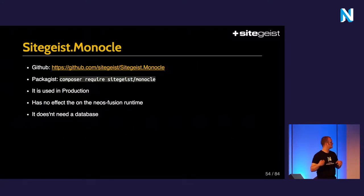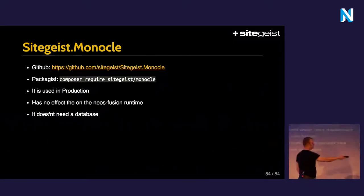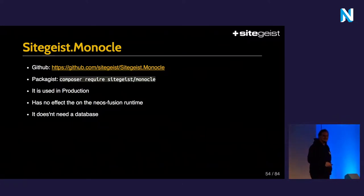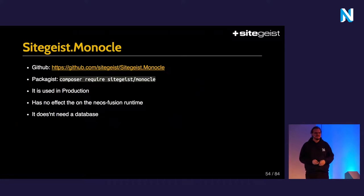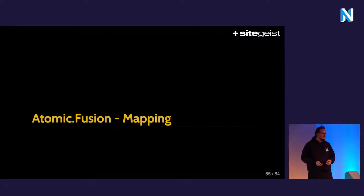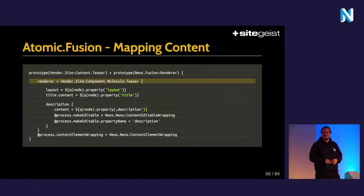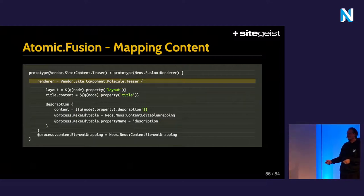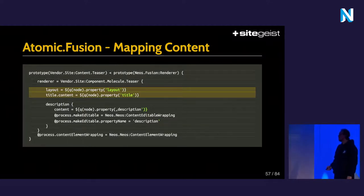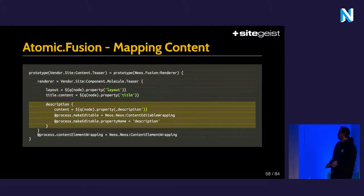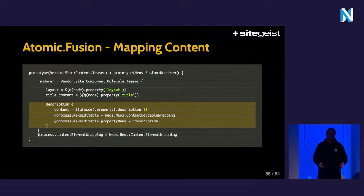This brings us to data acquisition — and this is for Wilhelm. You're probably going to say: this is all nice, but I'm supposed to render content. How do we do that? This is a process we call mapping in Atomic Fusion. You have the presentational components and you use them in a different process to just throw in the data. This is a presentational component — Molecule.Teaser — and we put in the node property 'layout' into the layout prop, the title property of the node into the title prop. Even if you want editable content, we can just wrap it and pass it as a prop. It's very easy to do that.